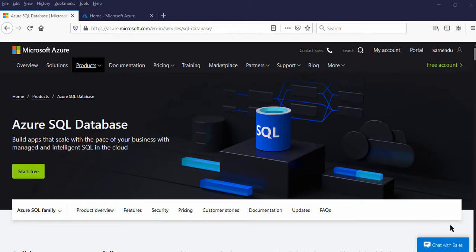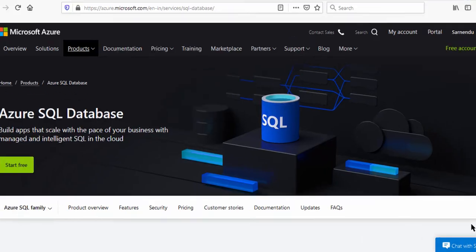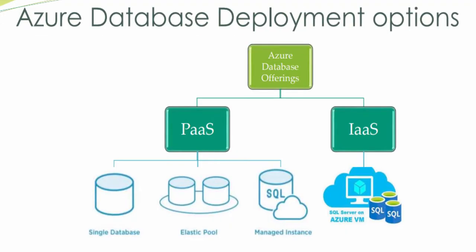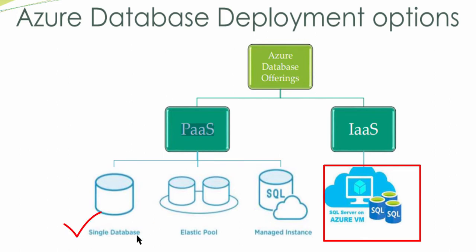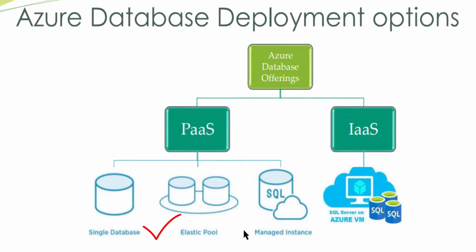Before creating Azure SQL Server and Azure SQL Database, let us know what are the deployment models available for the Azure SQL Database. These are the Azure Database deployment options. Azure Database offers two types of deployment options: the first three under Platform as a Service, and the last one under Infrastructure as a Service. Under Platform as a Service, we have Single Database, Elastic Pool, and Managed Instance. Under Infrastructure as a Service, we have SQL Server on Azure Virtual Machine.